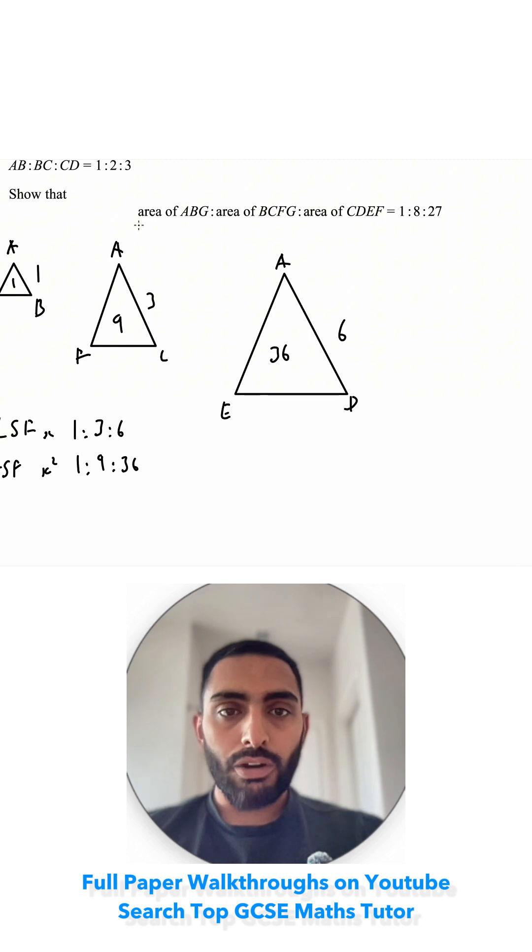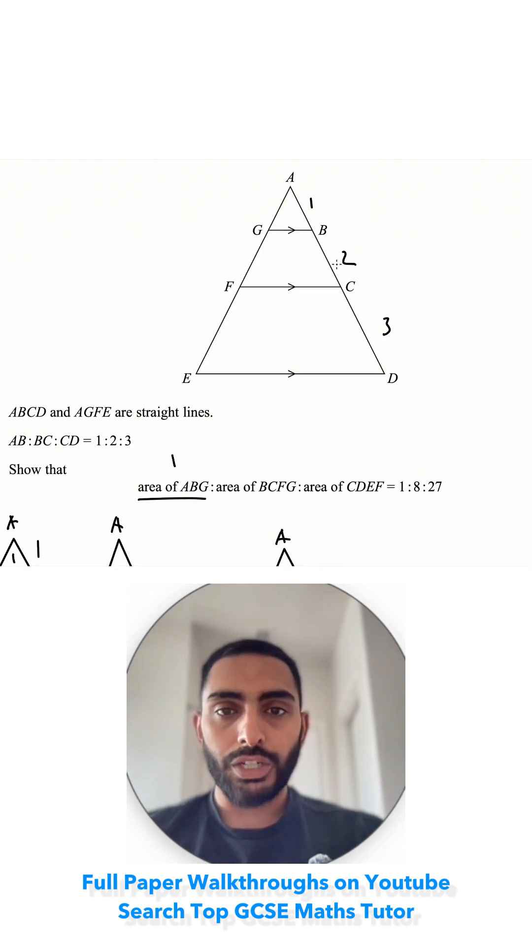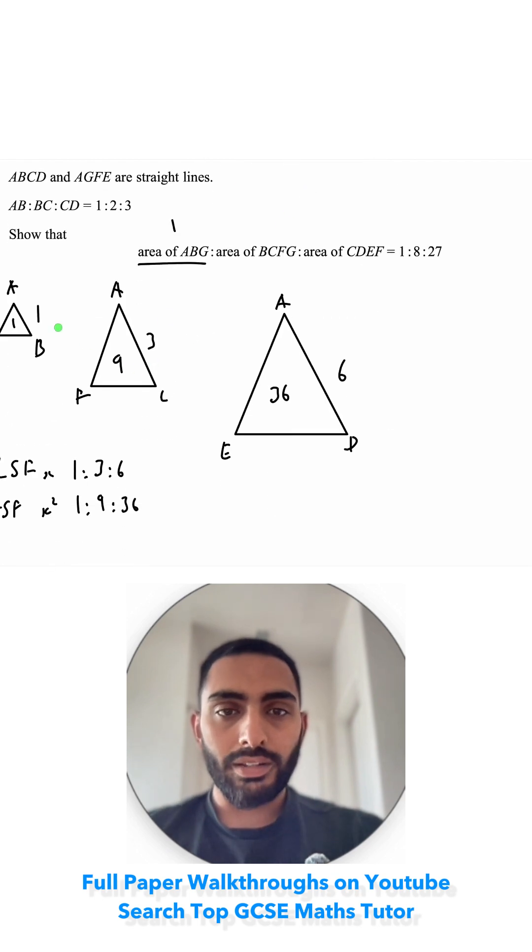We already have the area of ABG, which is 1. We need to find the area of BCFG. So BCFG is this trapezium over here, and I need to find the area of this large triangle, and I take away the area of this small triangle over here, ABG. So I'm doing 9 take away 1. So that's 9 take away 1 for that one.